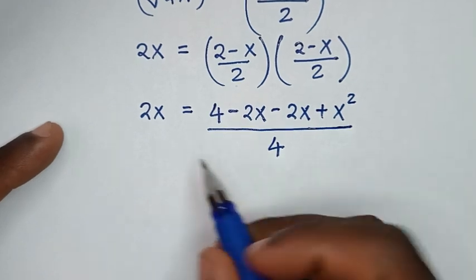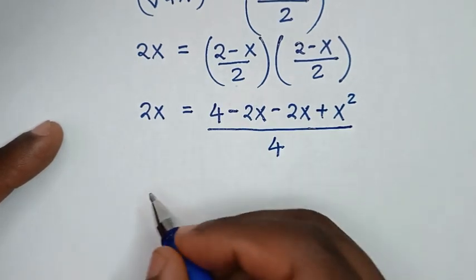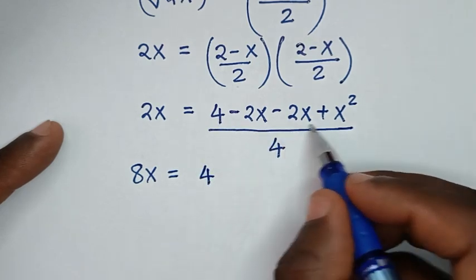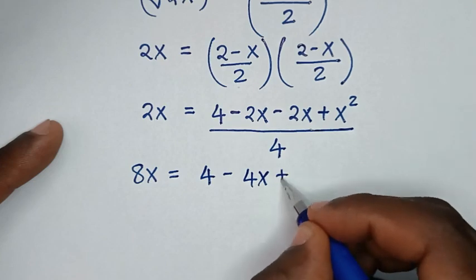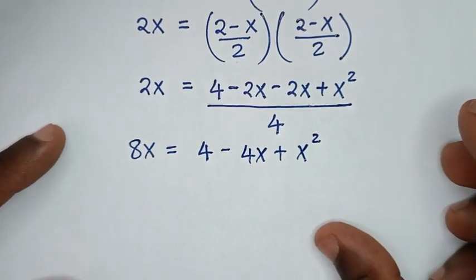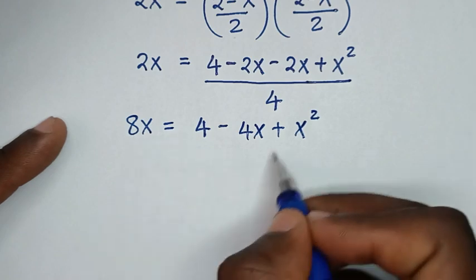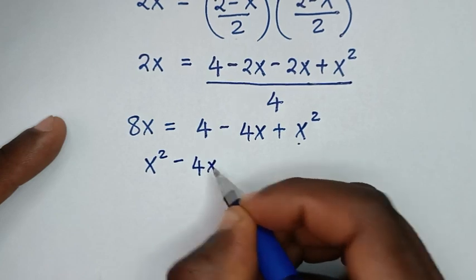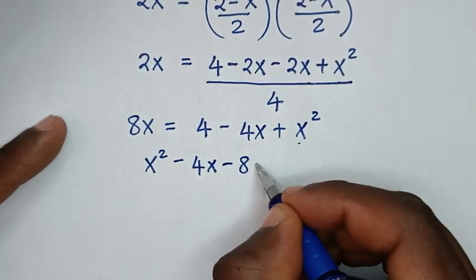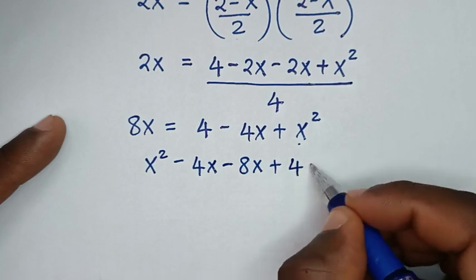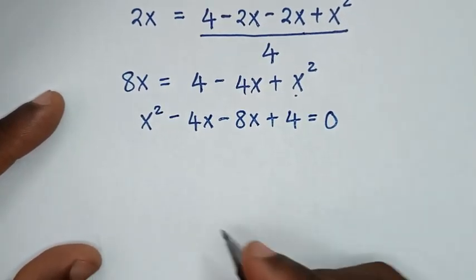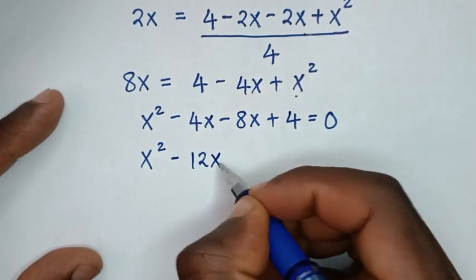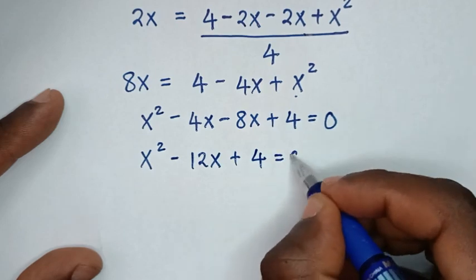Over 2 times 2 is 4, then multiplying both sides by 4: 2x × 4 = 8x equals 4 - 2x - 2x + x², which gives x² - 4x. Taking 8x to the other side: x² - 4x - 8x + 4 = 0, so x² - 12x + 4 = 0.